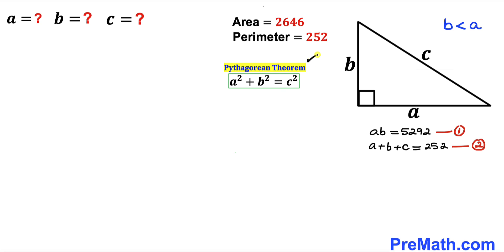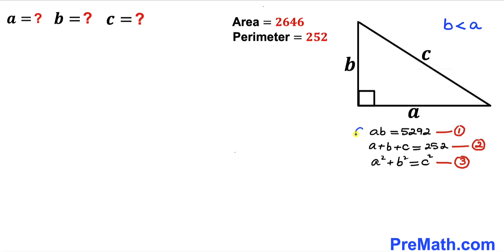Now let's recall the Pythagorean theorem, since we are dealing with a right triangle. The Pythagorean theorem states A squared plus B squared equals C squared. Let's call this equation number three. We now have a system of three equations.